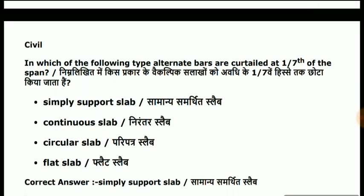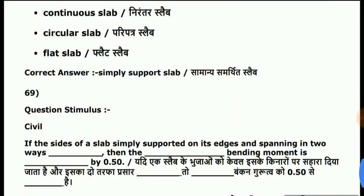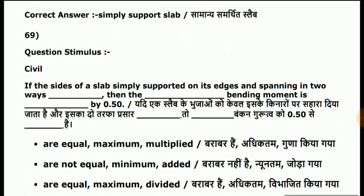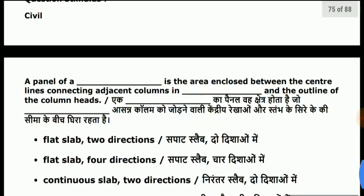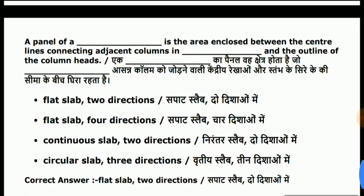This question is about reinforced cement concrete. In which type of slab are alternate bars curtailed at 1/7th of the span? Answer is simply supported slab. A panel of a slab that has its sides simply supported on its edges and spanning in two ways — answer is flat slab and two directions.